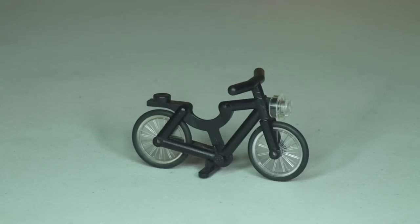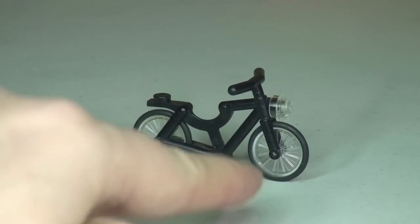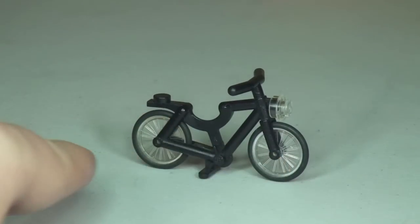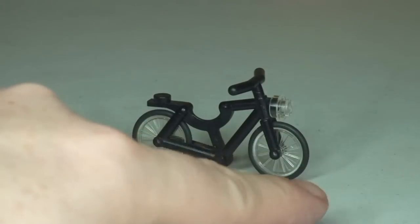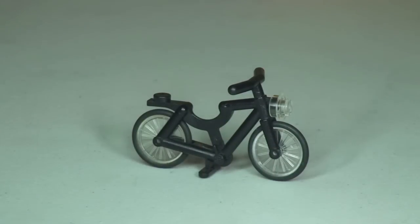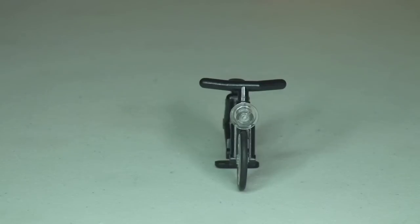Okay, so next up we have the bicycle and a pretty cool design, considering this is back in 1986. And we can see the translucent clear wheels here, and the tiles on them do come off. They're like little rubber tiles.